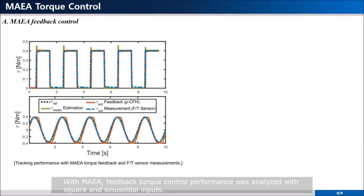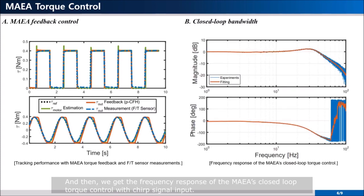With MAEA, feedback torque control performance was analyzed with square and sinusoidal input. The left graph describes the MAEA's tracking performance well. Also, the output torque overshoot was reduced to 4.5% by the spring damping characteristics. And then, we get the frequency response of the MAEA's closed-loop torque control with CHIRP signal input. Therefore, closed-loop torque control bandwidth was derived at 45 Hz.